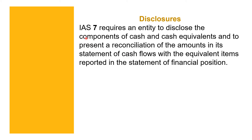Disclosures: IAS 7 requires an entity to disclose the components of cash and cash equivalents and to present a reconciliation of the amounts in the statement of cash flows with the equivalent items reported in the statement of financial position. Since cash and cash equivalents is an asset, it appears on the statement of financial position. The reconciliation — for example, beginning cash of 10,000 growing to ending cash of 100,000 — shows what came in, what went out, and what was spent, all visible in the statement of cash flows.